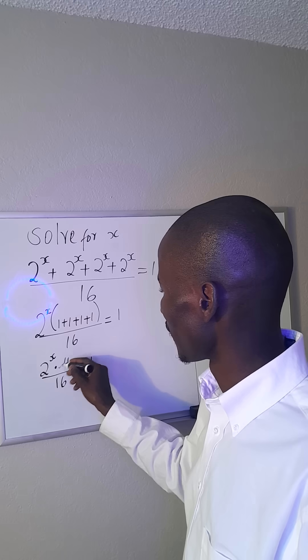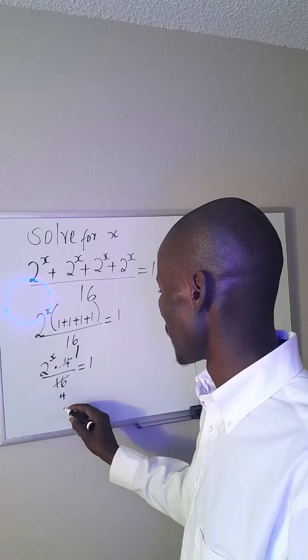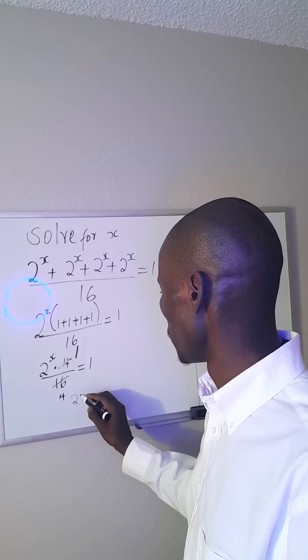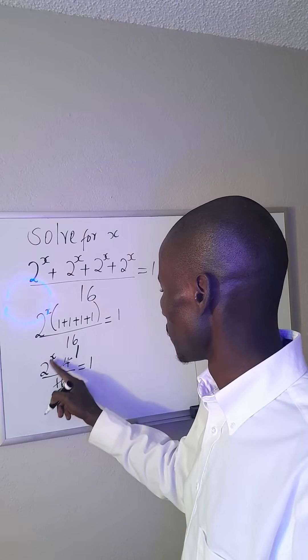Therefore, with that in mind, what do I have? I have 2^x. 2^x times 1 is just 2^x out of 4 is equal to 1.